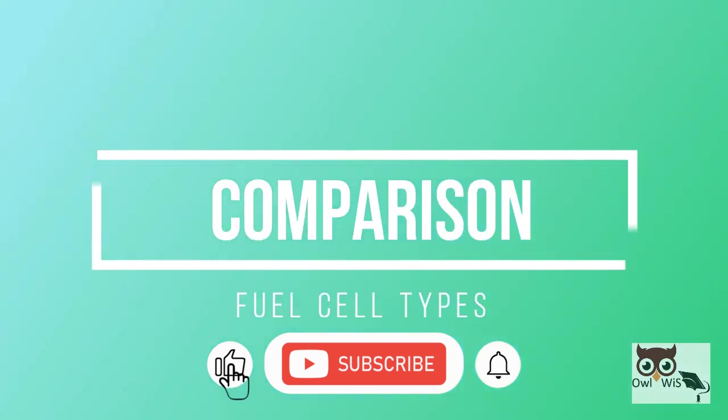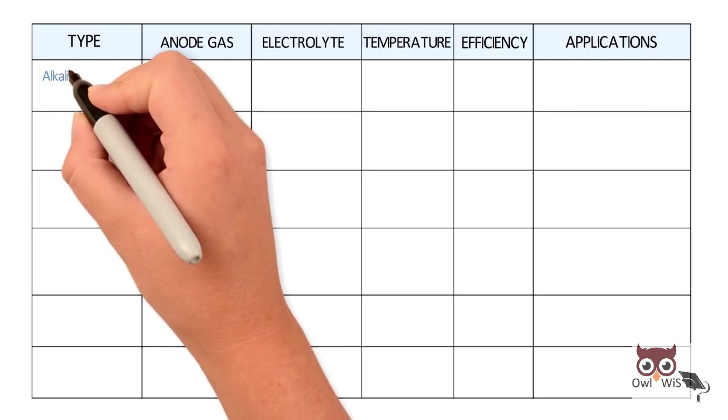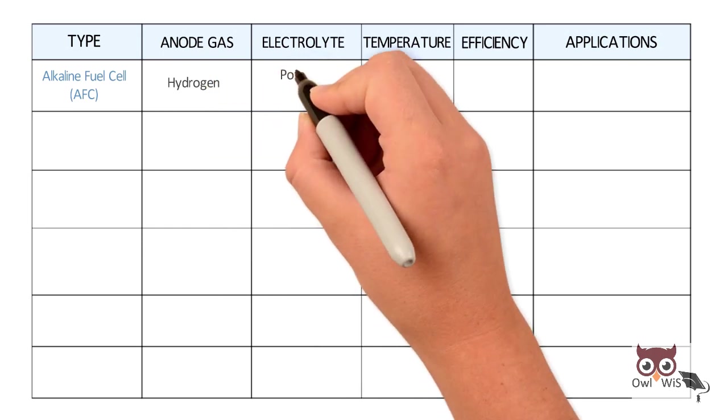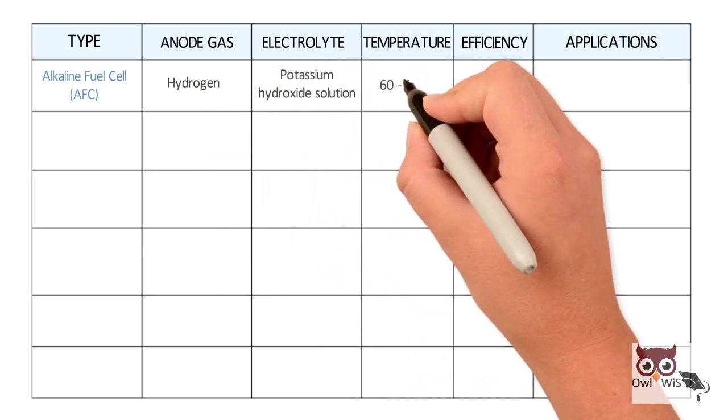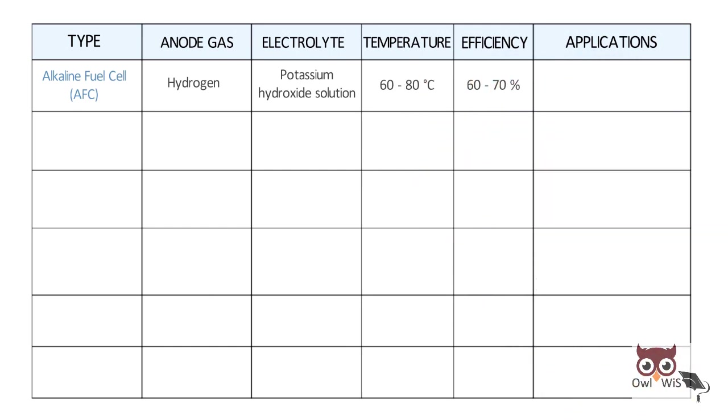Here is a quick comparison of different fuel cell types. Alkaline fuel cell, AFC. Anode gas is hydrogen. Potassium hydroxide solution is used as an electrolyte, with working temperature around 80 degree Celsius. Efficiency is used in space, military and backup power.